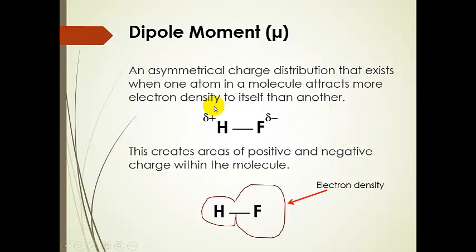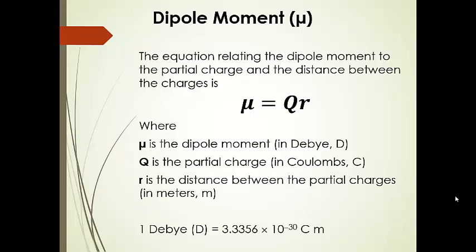For example, HF — hydrogen fluoride or hydrofluoric acid — has a partially positively charged hydrogen and more electron density around the fluorine, which results in a partial negative charge. You can see this polarized electron cloud, so we would say that hydrogen fluoride has a molecular dipole. The equation relating this dipole moment to the partial charge and the distance between the charges is: μ = Q × R, where the Greek letter mu (μ) is our symbol for dipole moment, capital Q is our partial charge in Coulombs, and R is the distance between the partial charges in the molecule. The dipole moment has units of Debyes.